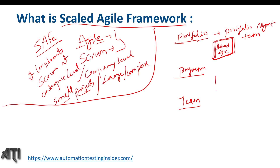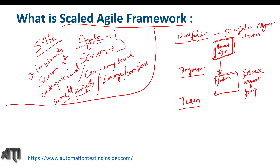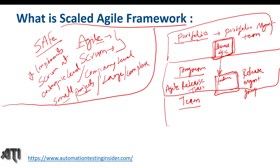To implement those business epics into features, we have the program level — the second level. This is handled by the Release Management Group, who manages the features that need to be implemented. They take the business epics from the portfolio management group and convert them into features. This level is also called the Agile Release Train.